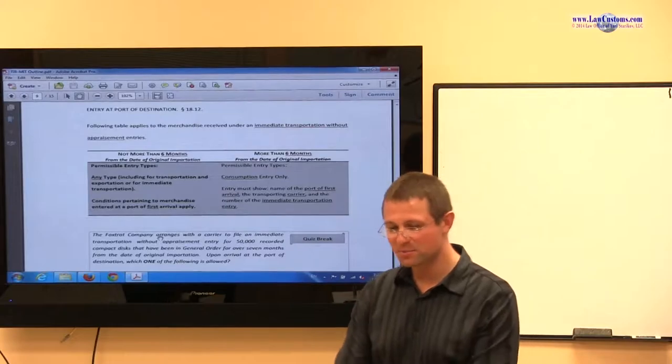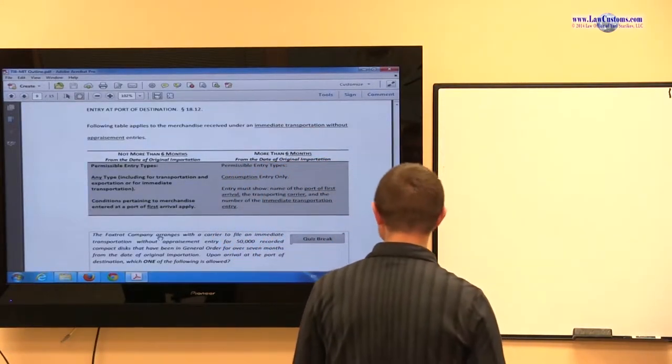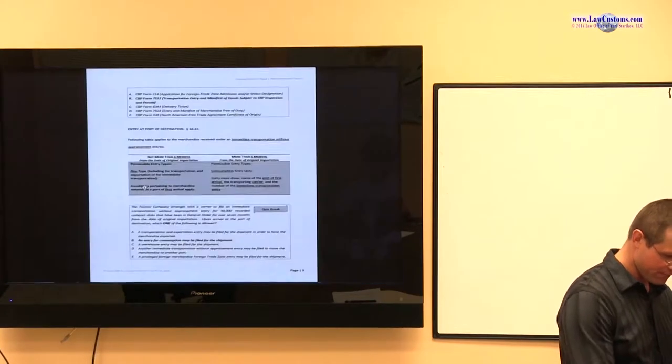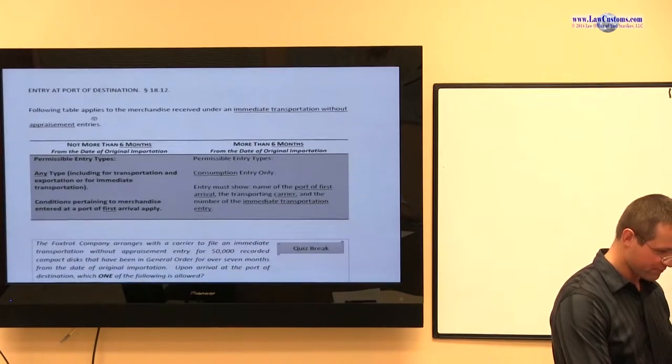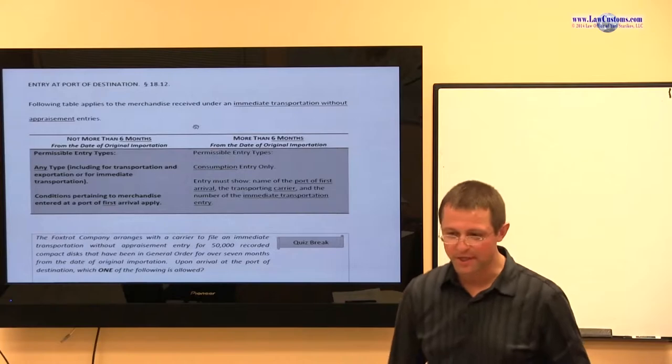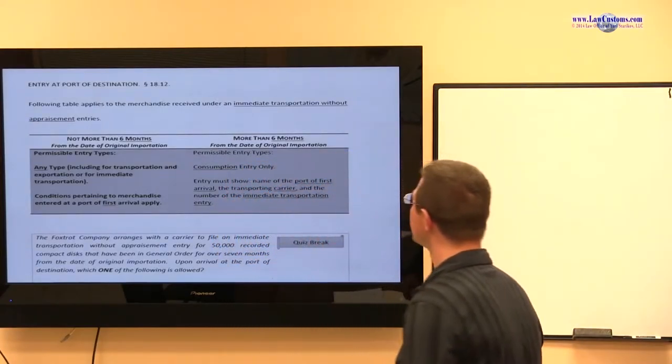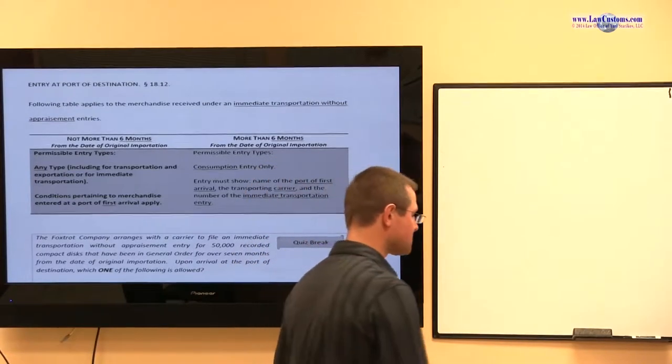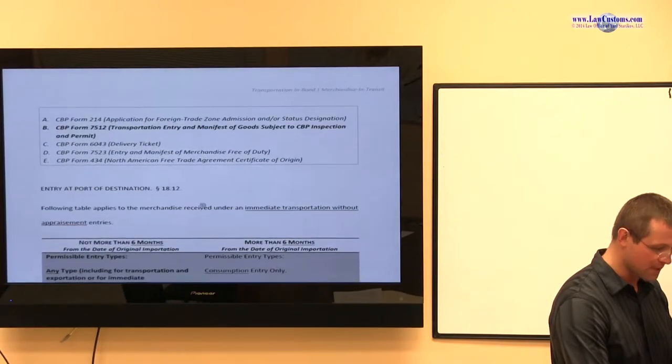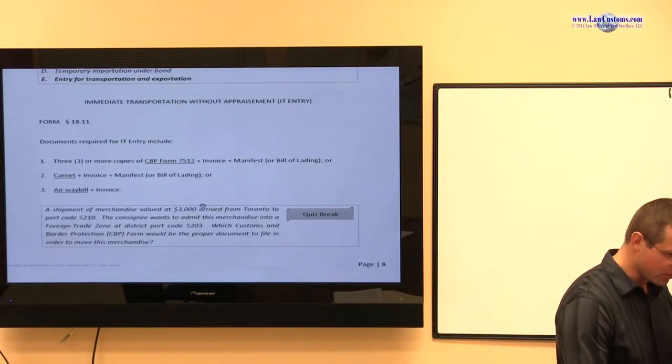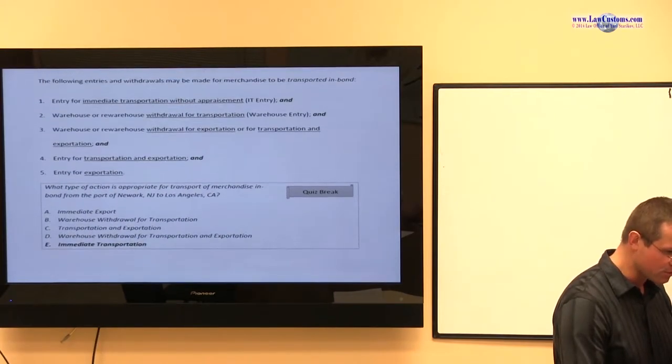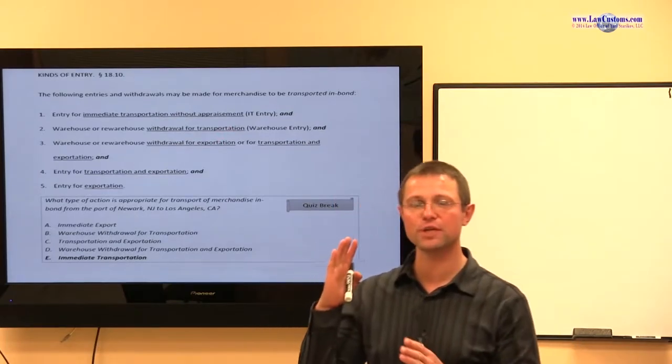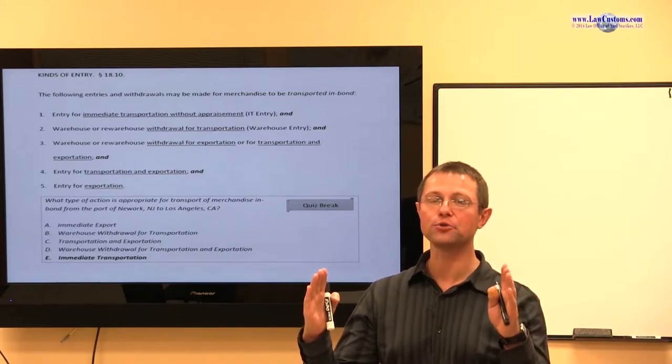We're still covering transportation inbound merchandising transit. We stopped last time at entry at the port of destination, and we're presented with a table. What is that table? Well, that table means you have various types of transportations, the transportation inbound that you are allowed to do. Those inbound transportation include a list of five, they are right here. Entry for immediate transportation without appraisement, which means you take it from one port to another port within the United States and you clear it at the last port.